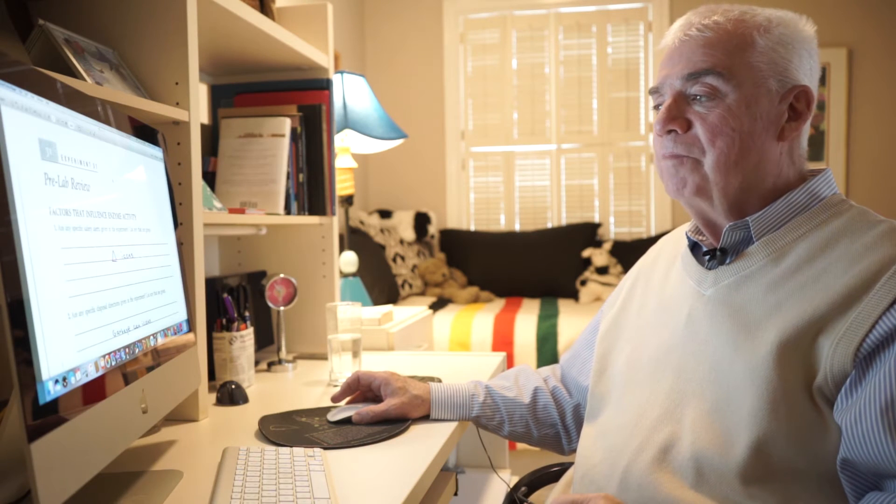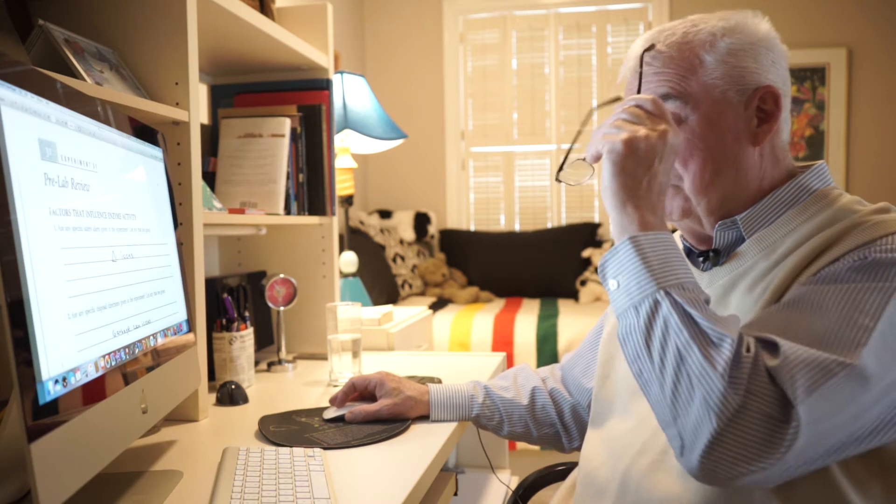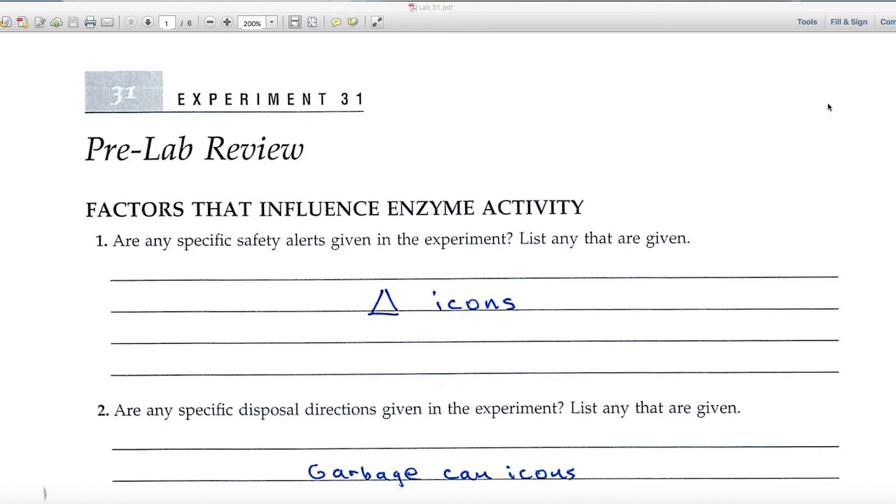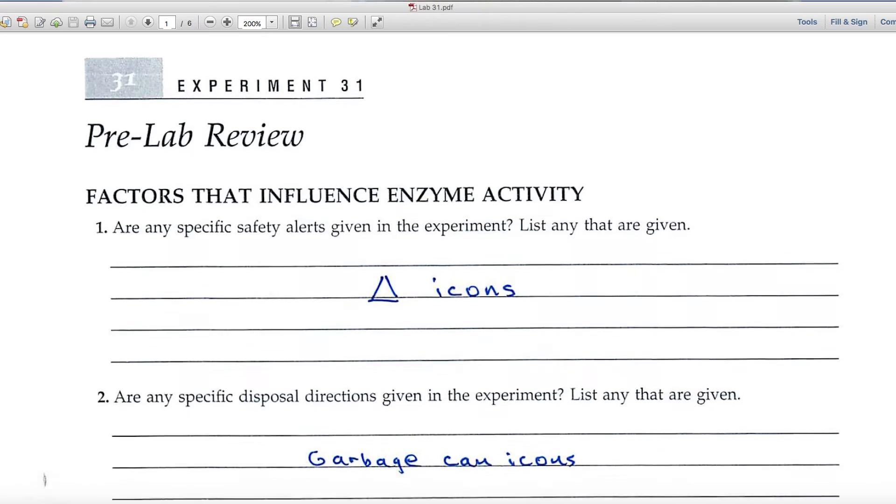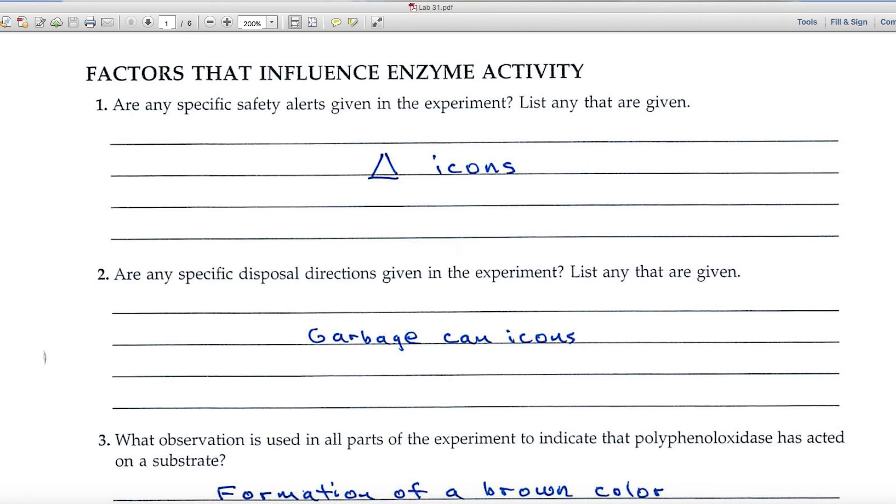Experiment 31 deals with enzymes and the factors that affect enzyme activity. Let's have a look at the pre-lab review pages. Question number one asks about safety alerts. Remember that you'll look for the triangle icons.